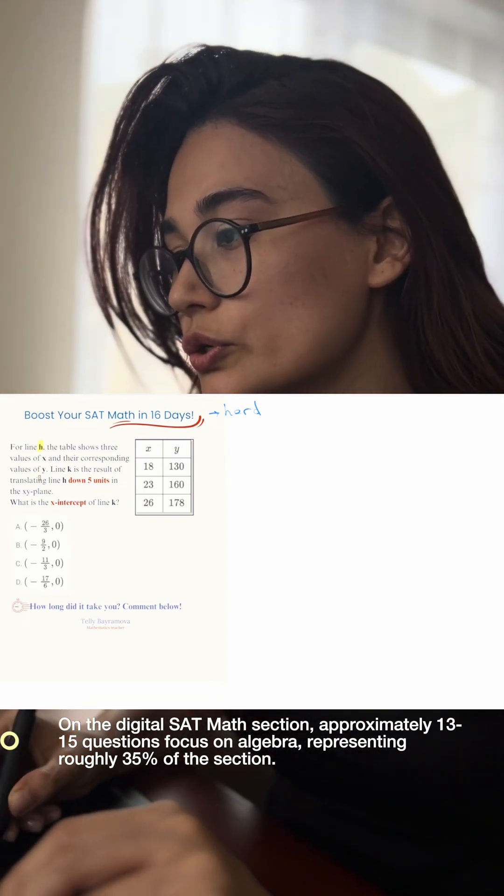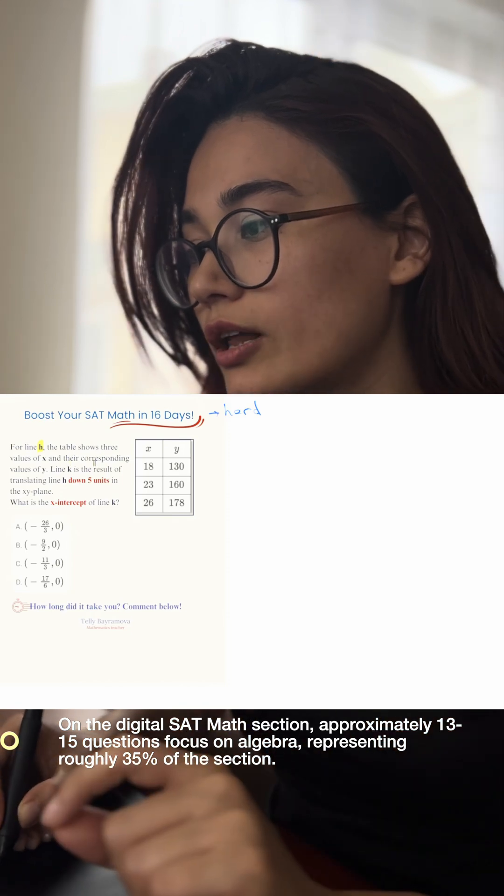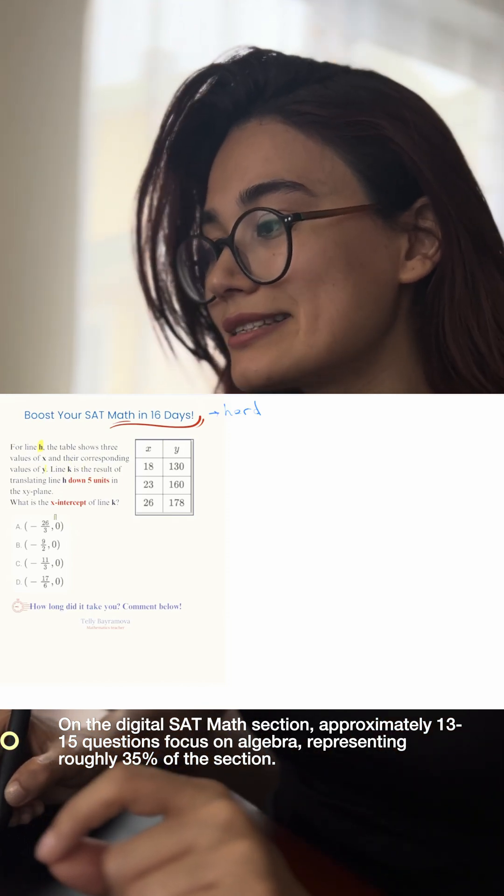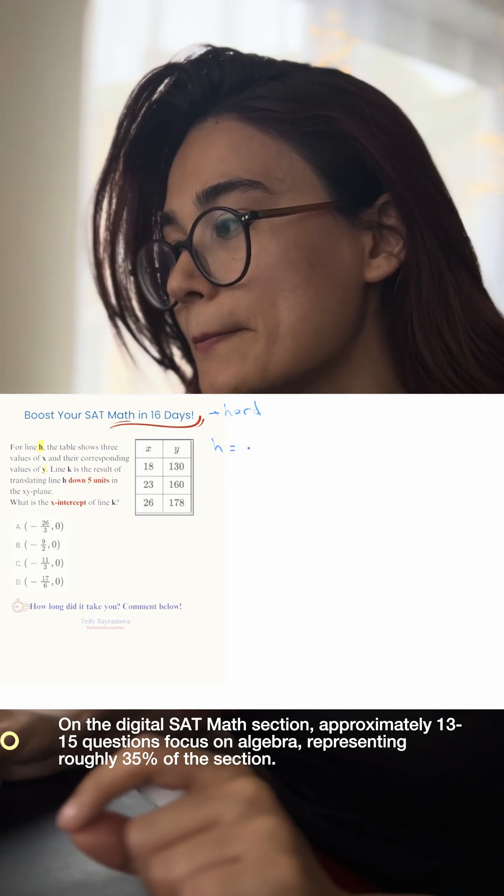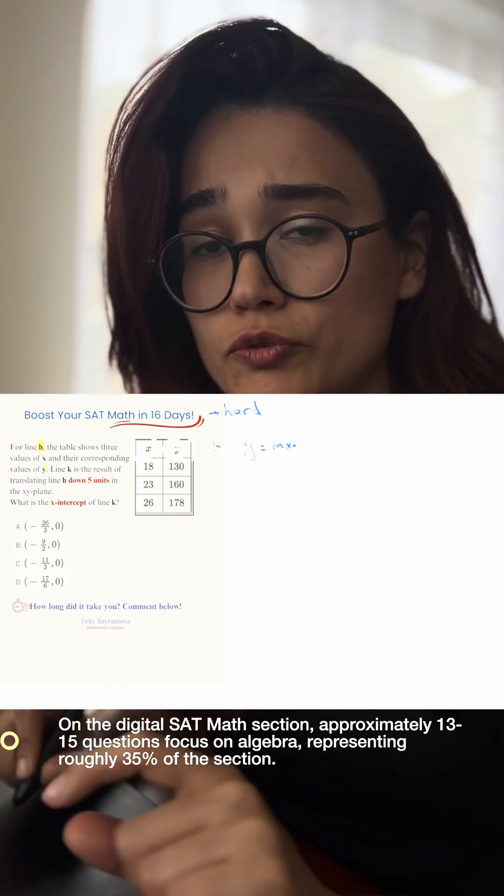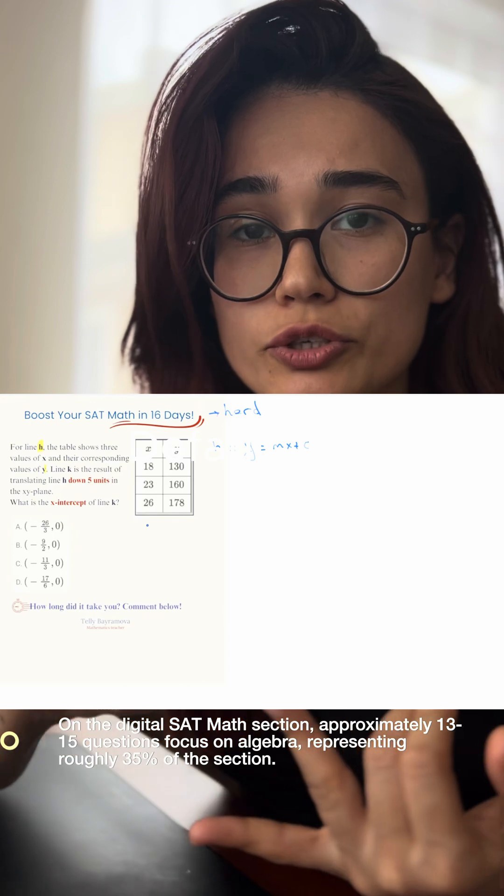Line h: the table shows three values for x and the corresponding values of y. Line k is the result of line h. First, what's the equation of the line, y equals mx plus c, without decimals? To find the equation of a line, you need to find m, find c, then plug in the numbers. But we can use Desmos for this question, so let's open Desmos.